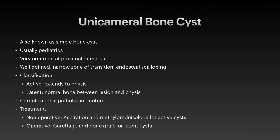Unicameral bone cysts are also known as simple bone cysts. They usually occur in pediatric and young patients. It is very common at the proximal humerus, although it can happen in any other bones such as the proximal femur, but 50–60% happen in the proximal humerus. These lesions are non-aggressive, well-defined, have a narrow zone of transition, and show endosteal scalloping. There is no cortical breakthrough or periosteal reaction unless fractured, and there is no surrounding mass.